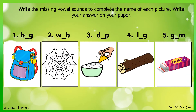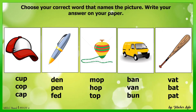For your next activity, write the missing vowel sounds to complete the name of each picture. Write your answer on your paper. For the following activity, choose the correct word that names the picture. Write your answer on your paper.